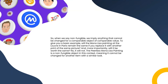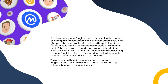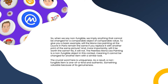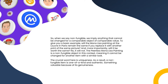When we say non-fungible, we imply anything that cannot be changed for a comparable object of comparable value. To give a basic example: will the Mona Lisa painting at the Louvre in Paris remain the same if you replace it with another print of the same picture? No, it will not. The peerless Mona Lisa painting is a non-fungible object, meaning it cannot be changed for another item with a similar look. The crucial word here is uniqueness — a non-fungible item is one of a kind, authentic, and valuable because of its genuineness.